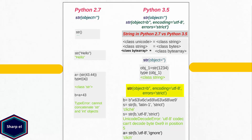The last argument, errors, defines the error handling and has a default value of strict. Other possible values are ignore, replace, etc. Here we have object b which contains a sequence of bytes encoded in latin1. I pass object b as the first argument of the string function, the second argument is latin1, and the last argument strict means throw an exception if any decoding error occurs. In our first example we get no error and the output is the unicode string 'cliché'. Now if we change the encoding argument to utf8, the string function throws an error because we chose the wrong encoding. Changing the errors argument to ignore means all decoding errors are ignored, so we get no errors but the wrong output.